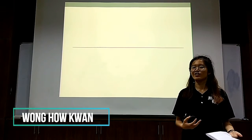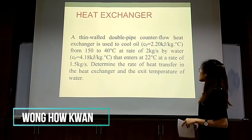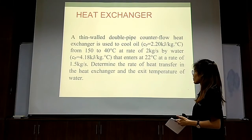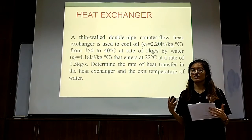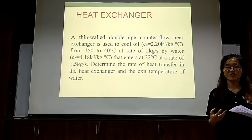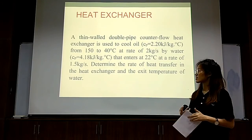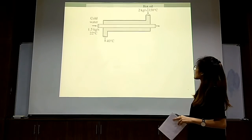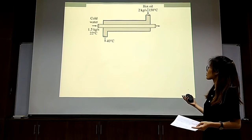Hello, my name is Rung Hau Kwon and I would like to continue with the second question. The question is: a thin-wall double pipe counterflow heat exchanger is used to cool oil from 150°C to 40°C at a rate of 2 kg/s, by water that enters at 22°C at a rate of 1.5 kg/s. We are asked to determine the rate of heat transfer in the heat exchanger and the exit temperature of the water. This is the diagram showing the hot oil flowing inside and the cold water flowing around it.